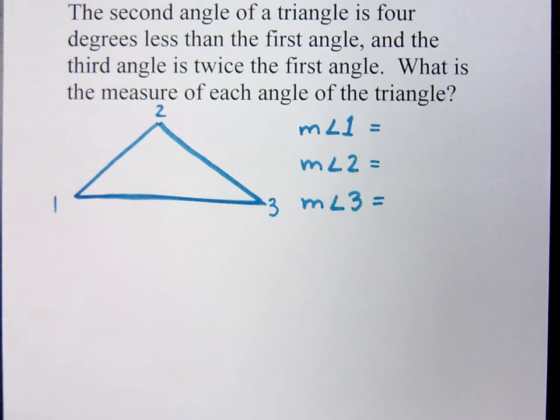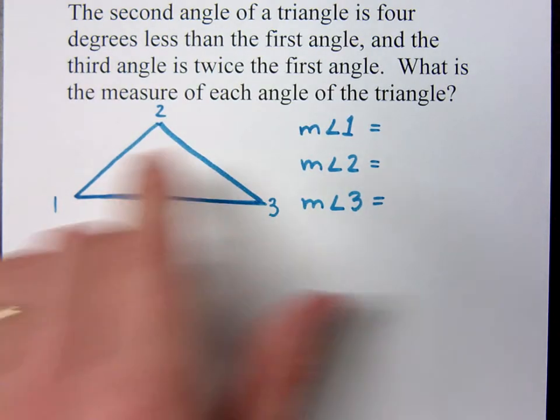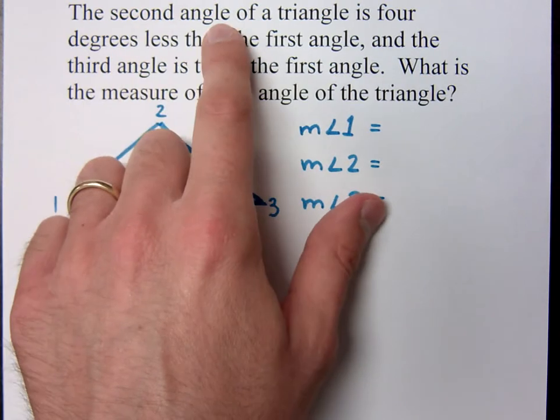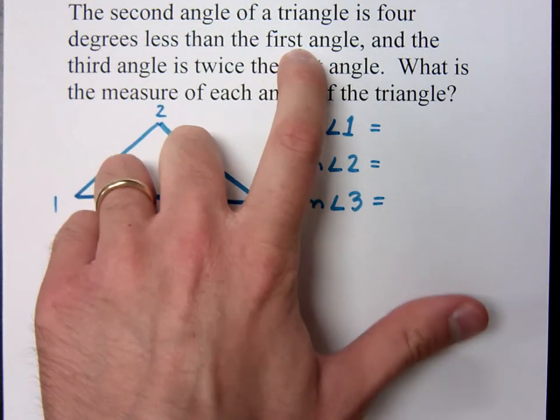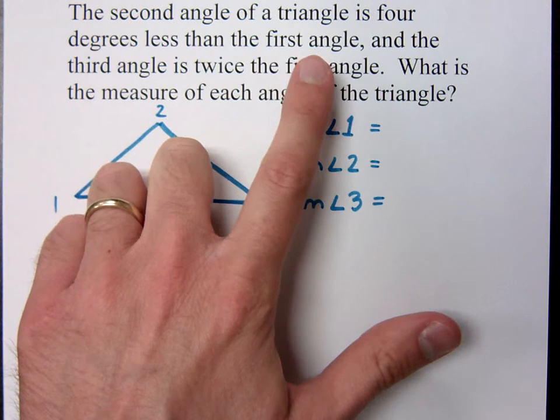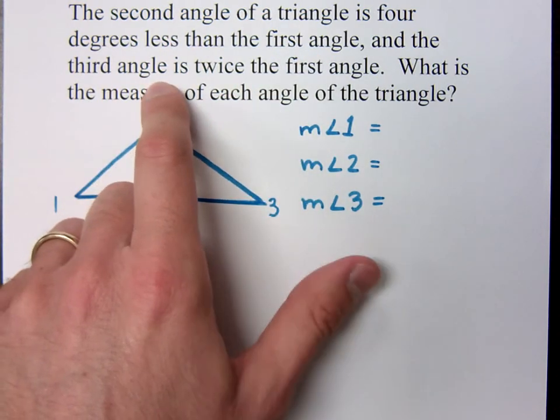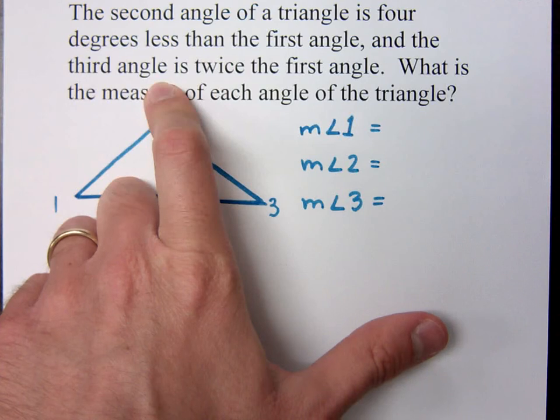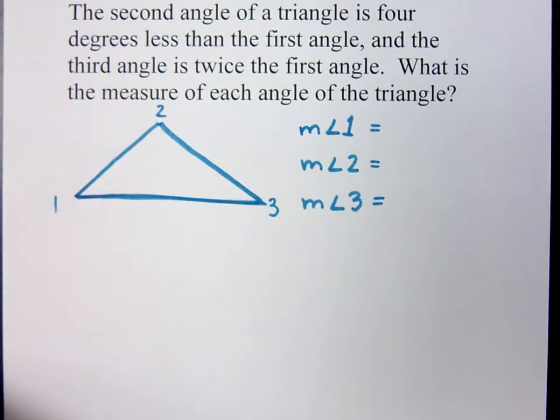Now, I've got three things that I don't know here. But it goes back to what I said before. What's the guy you know least about? There's somebody here we don't know anything about. We don't know anything about the sides. I don't care about the sides of this triangle. I care about the angles of the triangle. But of these three angles, I do know something about the second one. Because the second one is four less than the first one. So I know something about the second one. The first angle is the guy I don't know anything about, right? Everybody else depends on him.